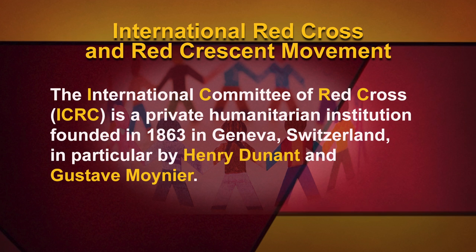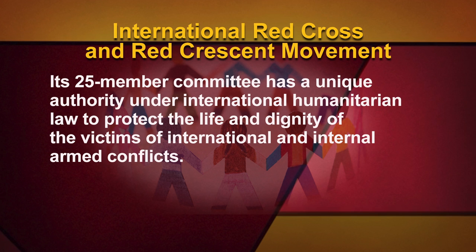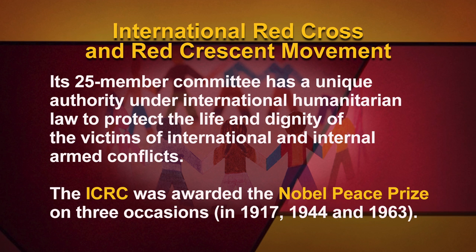Its story is about the development of humanitarian action, the Geneva Conventions and the Red Cross and Red Crescent movement. The International Committee of the Red Cross (ICRC) is a private humanitarian institution founded in 1863 in Geneva, Switzerland, in particular by Henry Dunant and Gustave Moynier. Its 25-member committee has a unique authority under international humanitarian law to protect the life and dignity of the victims of international and internal armed conflicts. The ICRC was awarded the Nobel Peace Prize on three occasions: in 1917, 1944 and 1963.